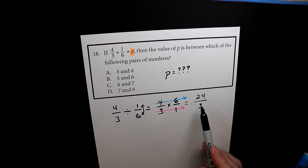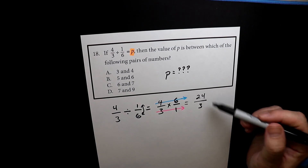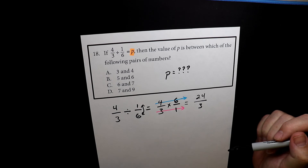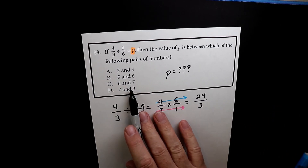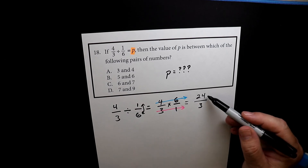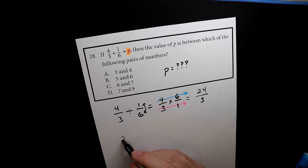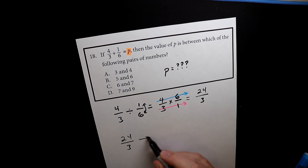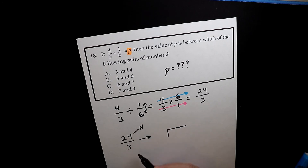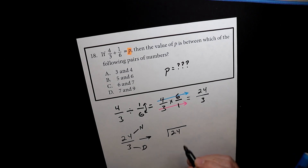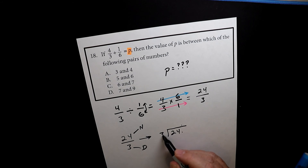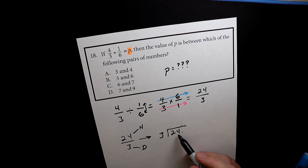Now we have a problem: we have an improper fraction, which means it's a fraction greater than 1. Over here I just have regular numbers, no fractions, so we have to convert 24 over 3 into a whole number. The denominator goes inside the house and the numerator goes outside. 3 goes into 24 eight times — 8 times 3 is 24, and 24 minus 24 is 0, so the answer is 8.